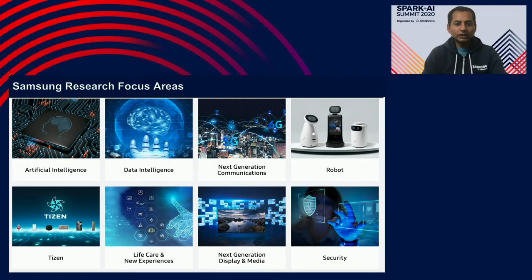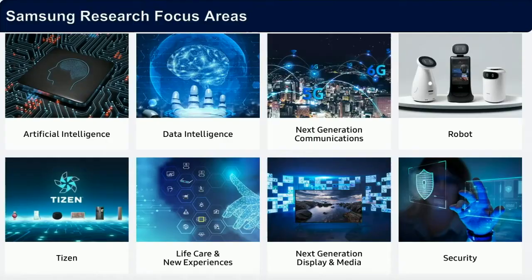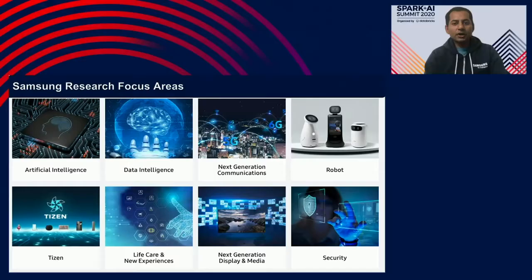These are some of our core research areas: artificial intelligence, where we focus on both hardware and software; data intelligence, leveraging our huge datasets; 5G and 6G and mobile technological advancements; robotics; Tizen, our operating system for TVs; and next-generation display and media. Our specific topic today is a deep dive into next-generation display and media.